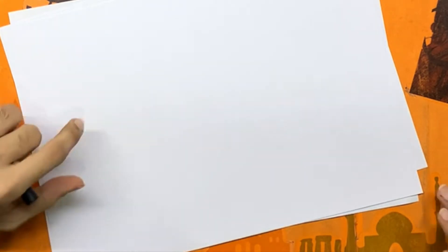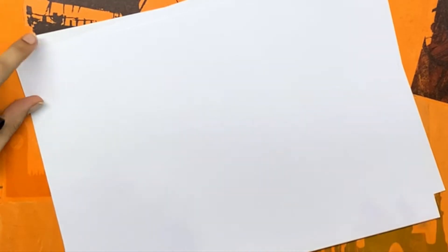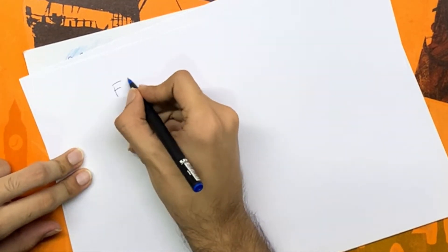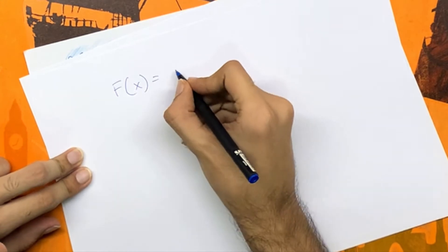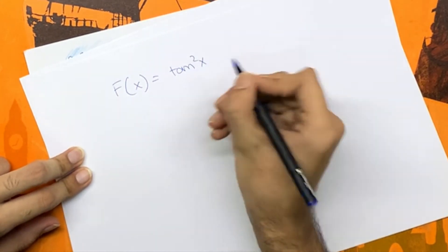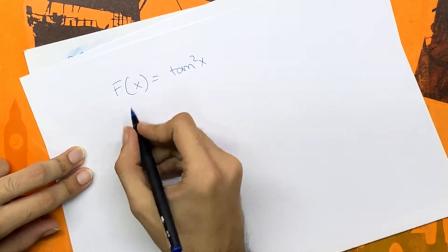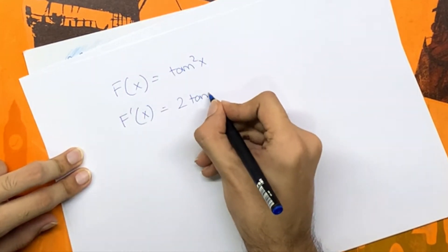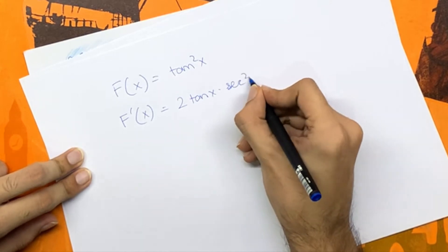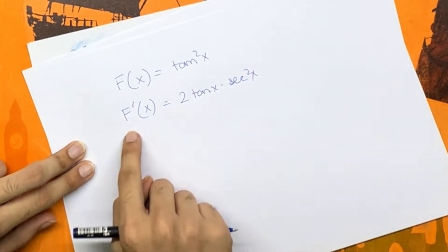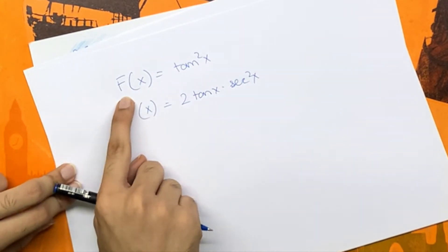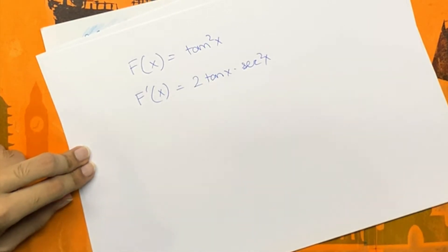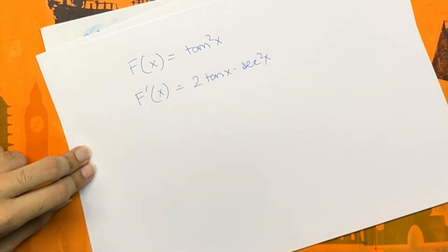I'm going to show you an example where, if we don't put the integration constant, our integral answers would differ. Let's take the function f(x) = tan²x. If we differentiate this function we get f'(x) = 2·tan(x)·sec²(x). Now if we integrate this we should get back to the original answer, and that only works if we put the integration constant.